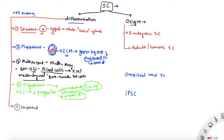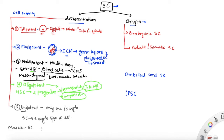From oligopotent, we come to unipotent stem cells. 'Uni' means one or single — these are stem cells that give rise to only a single type of cell, completely committed and specialized for that particular cell. For example, stem cells taken from muscle tissue can only differentiate into muscle cells, and stem cells from skin tissue will only become skin cells. Stem cells taken from any mature adult tissue are specialized to become only that particular cell type.